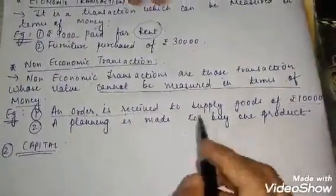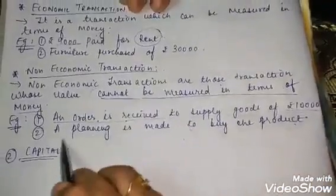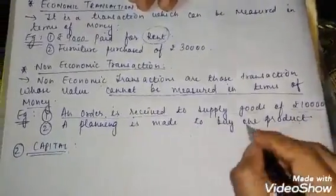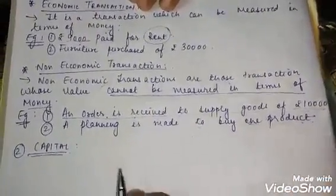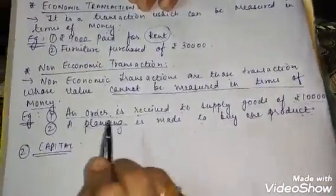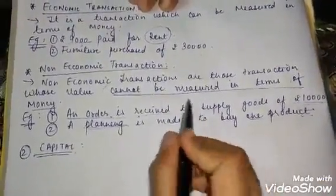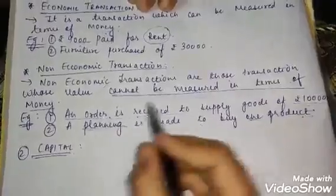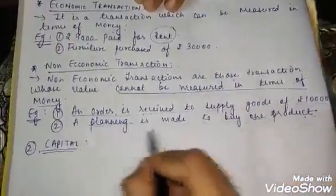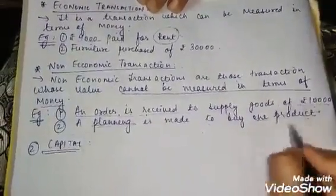Second example of a non-economic transaction: 'Planning is made to buy one product.' The business is planning to buy a product in the future — just planning, the product has not been purchased yet.